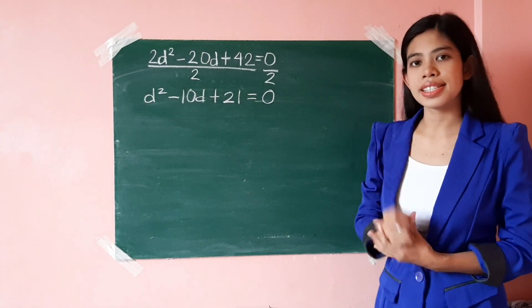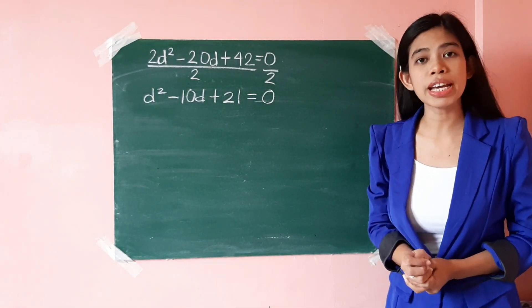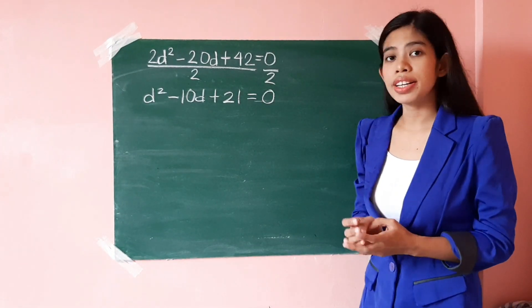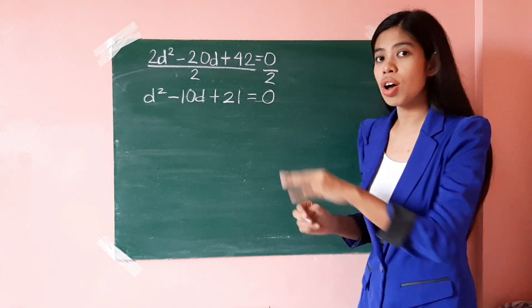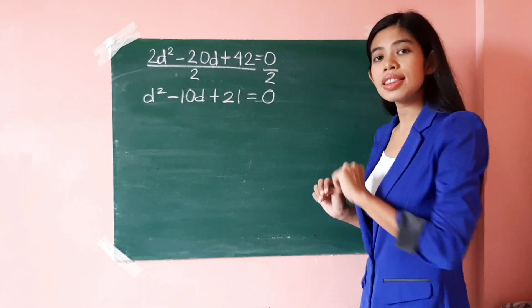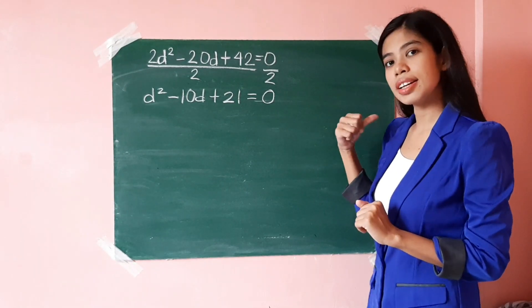Now, for the second step, all you need to do is to make sure that all of the variables or the terms with literal coefficients are on the left side of the equation and the constant term is on the right side.